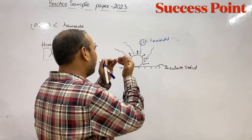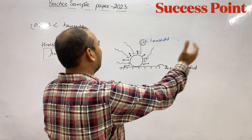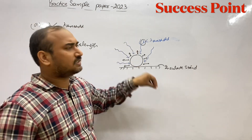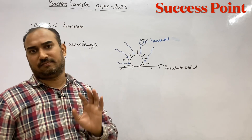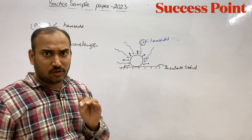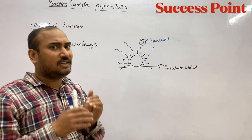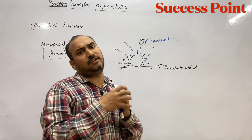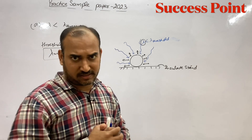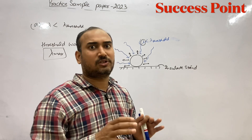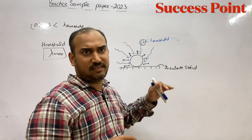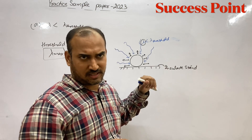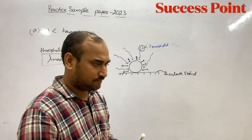जब valence band के सारे electrons बाहर हो जाएंगे तो उसके बाद electrons का emission stop हो जाएगा। क्योंकि जो अंदर electrons होते हैं वो बहुत tightly held होते हैं nucleus से। Suppose करो यहाँ हम कहते हैं कि आपने cesium (Cs) metal का use कर लिया।